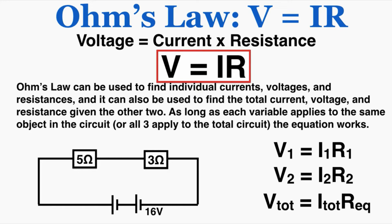So V₁, the voltage drop in resistor 1, will be equal to the current in resistor 1 times the resistance of resistor 1. Voltage drop 2 will be equal to the current in resistor 2 times the resistance of resistor 2. And the total voltage will be equal to the total current times the equivalent resistance.